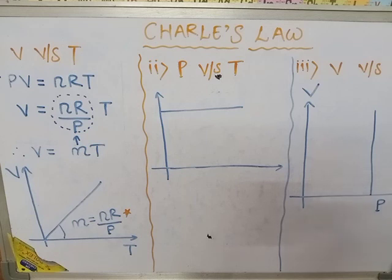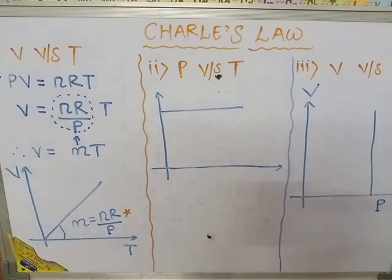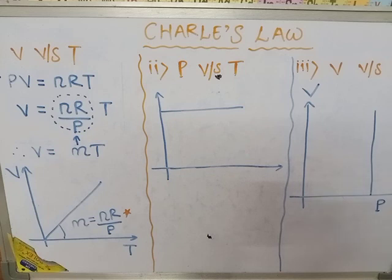The second graph is pressure versus temperature. In Charles law, pressure is always constant, so no matter how much you vary the temperature, pressure remains constant. Therefore the graph of pressure versus temperature in Charles law is a straight line parallel to the x-axis. The third graph is volume versus pressure — since pressure is always constant, we obtain a line parallel to the y-axis. This is the complete discussion of Charles law.